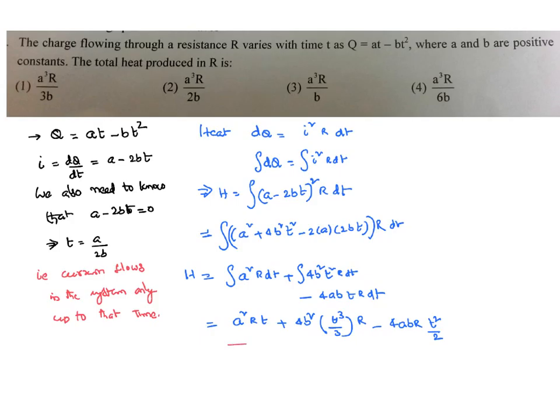To get the final answer, we can substitute: up to when will this current flow? It is nothing but equal to a by 2b. By substituting that in equation one, wherever there is a t, if you substitute a by 2b, it can be simplified.